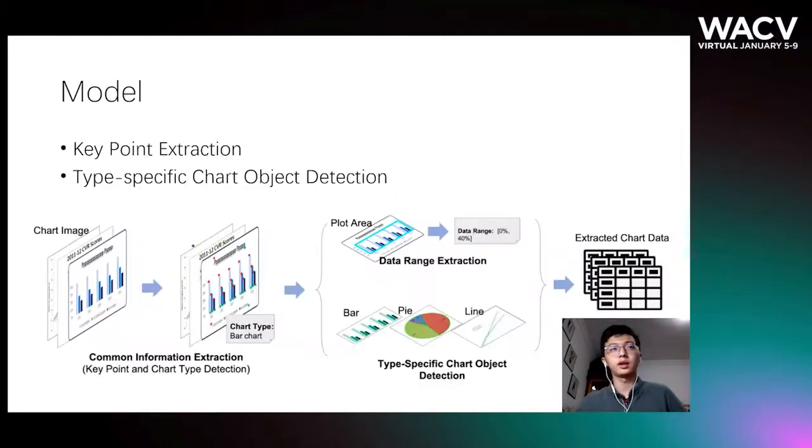The key idea of our model is to combine key-point extraction with type-specific chart-object detection methods to group the key points to form the final results. First, use deep models to extract the key points and the chart-type information. Then, we use rule-based methods to estimate the data range and group the key points into the final chart components to get the extracted data.